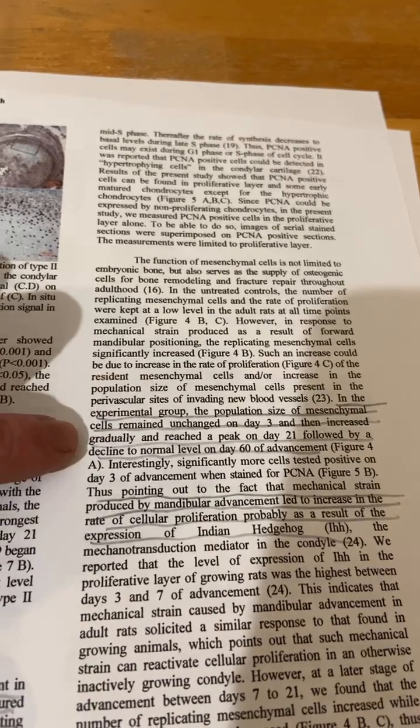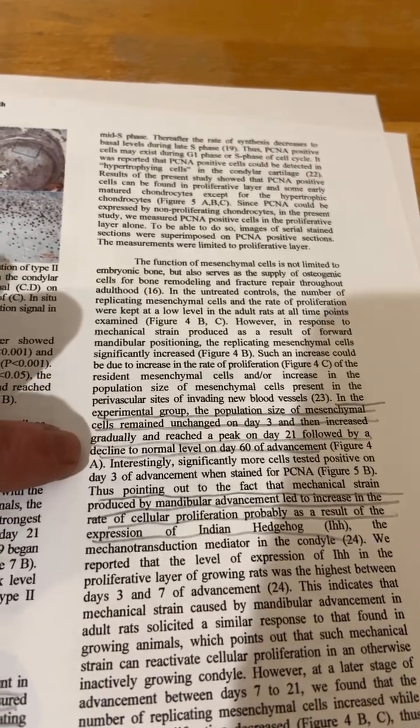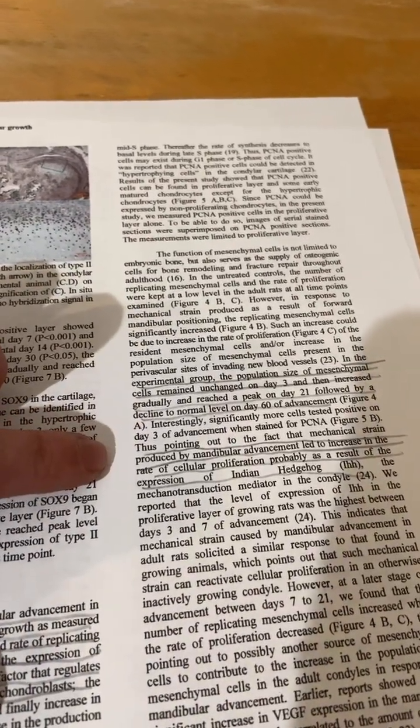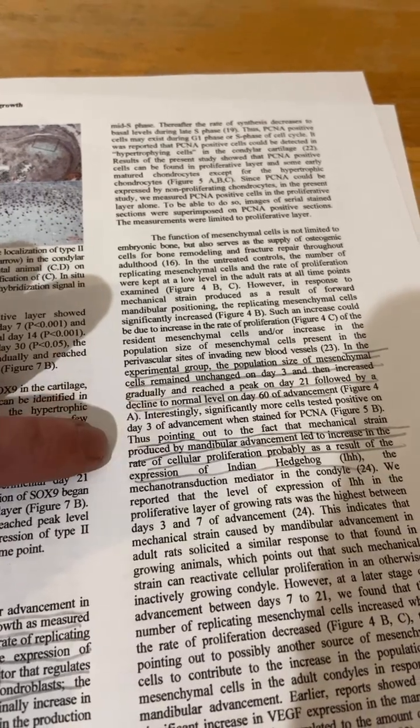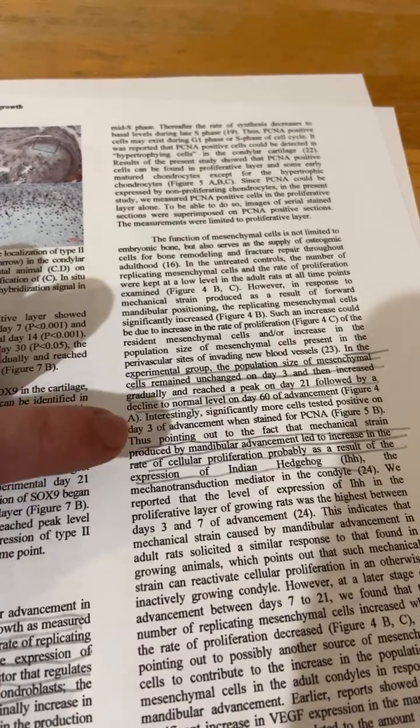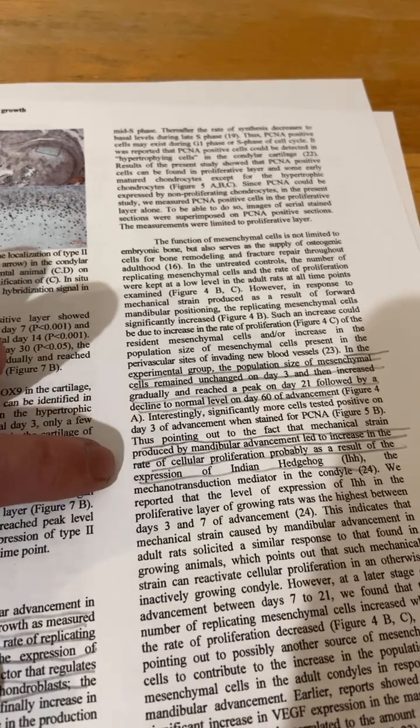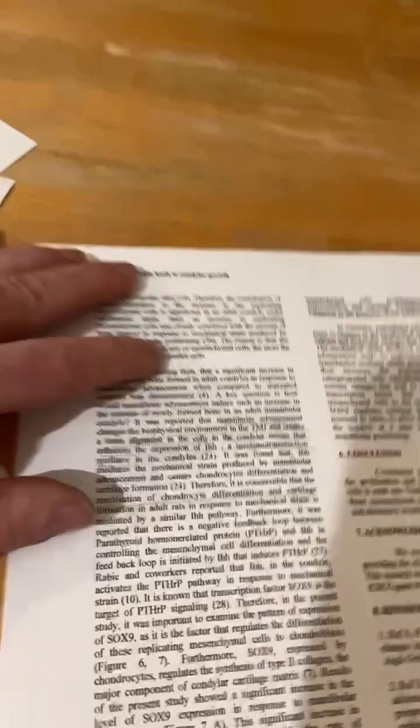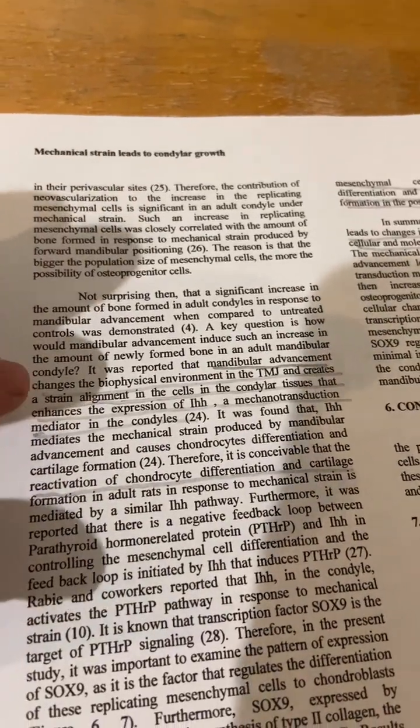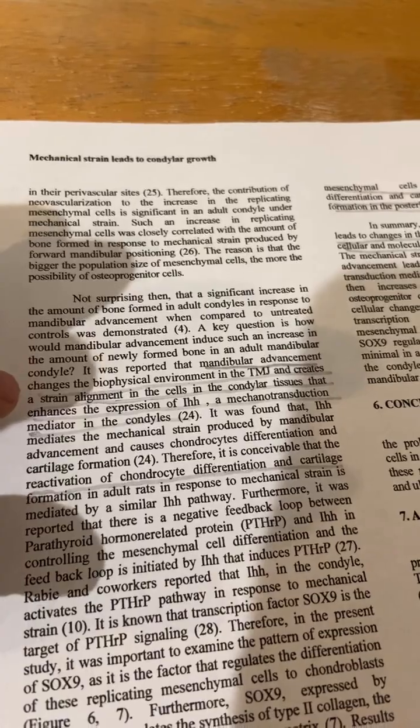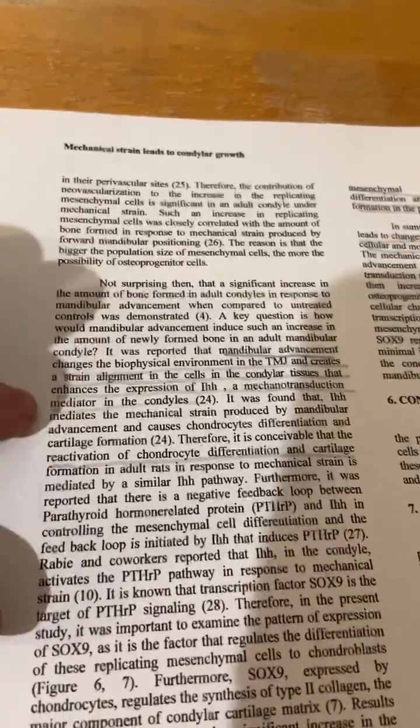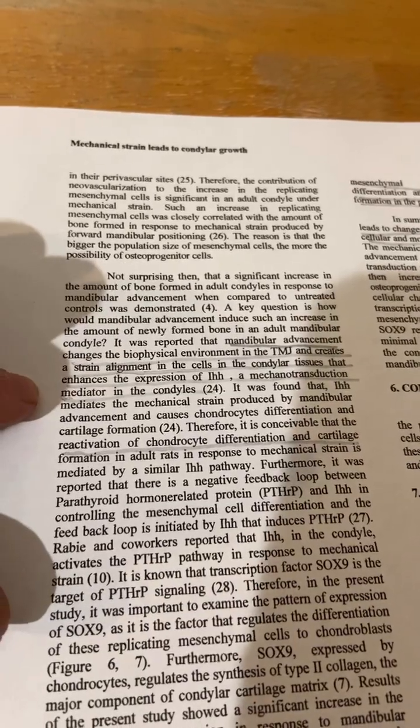I don't know why there's this big peak at day 21. Thus pointing to the fact that mechanical strain produced by mandibular advancement led to an increase of cellular proliferation, probably as a result of expression of Indian hedgehog. Mandibular advancement changes the biophysical environment in the TMJ and creates a strain alignment in the cells and the condylar tissue that enhances the expression of IHH to make mechanical transition mediator in the condyles.